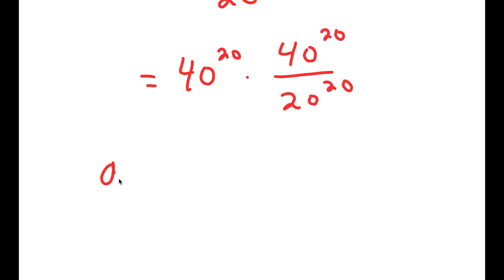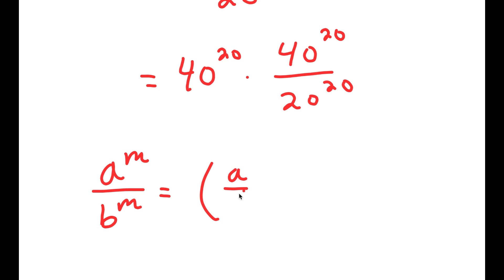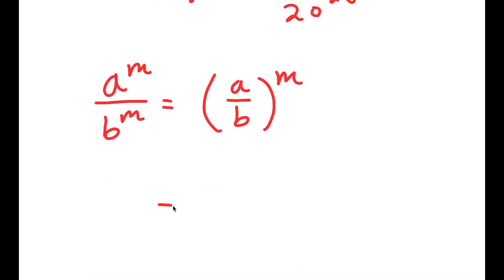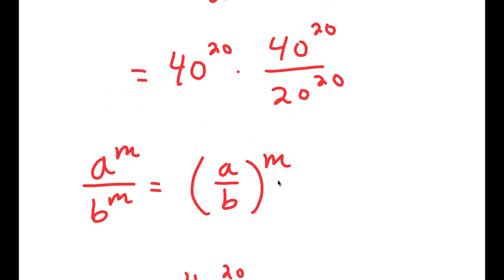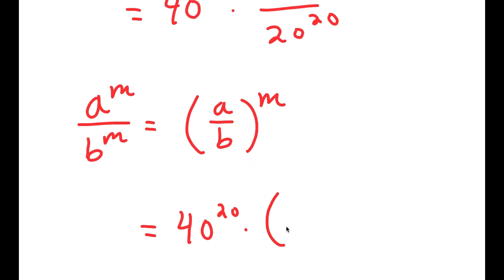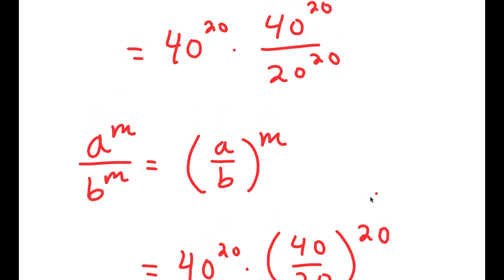And if I have something in the form a to the power of m over b to the power of m, this is equal to a over b to the power of m. This is going to equal 40 to the power of 20 times 40 over 20 to the power of 20.